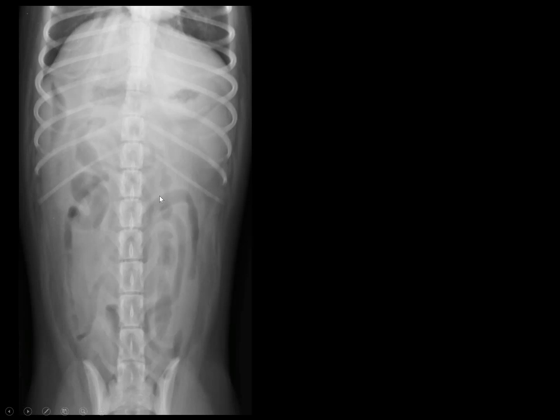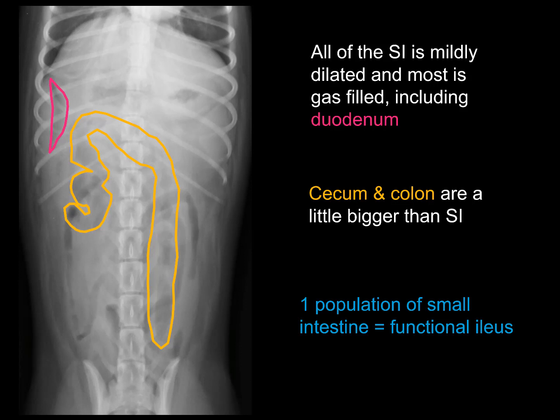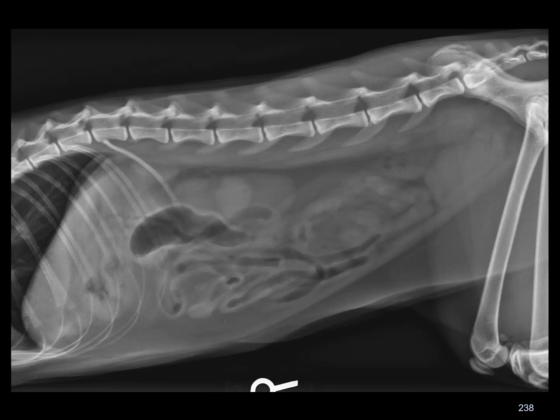On the VD view we have the same look. There's a little bit of variation in diameter, but not beyond what would be expected for a normal patient or a patient with a functional ileus — certainly not two populations of small intestine, and nothing severely distended. We can see where the cecum and colon are, so this is compatible with a nonspecific functional ileus with all the differentials that go with that.